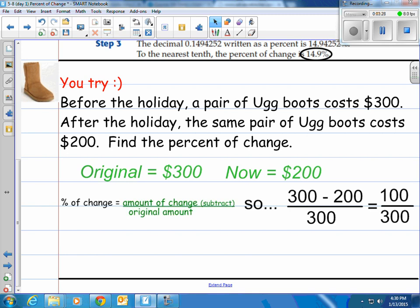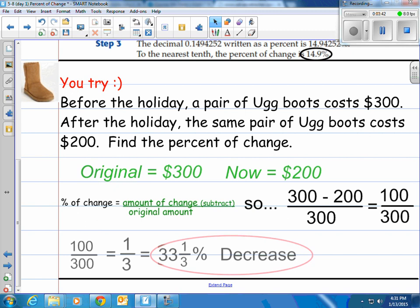We take the 300, we minus the 200 to get our 100, which is the amount of change, and then put that all over the original amount, which is 300. So we have 100 over 300. 100 over 300 is one-third, which is 33 and one-third percent. And we went from 300, which was the original, down to 200. So that's a decrease. The price decreased by 33 and one-third percent. The percentage change is a decrease of 33 and one-third percent.